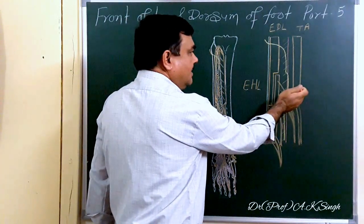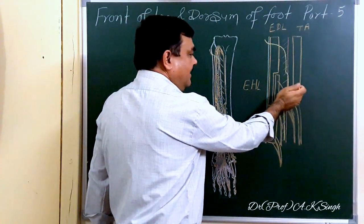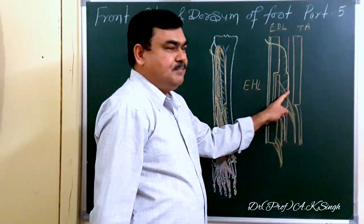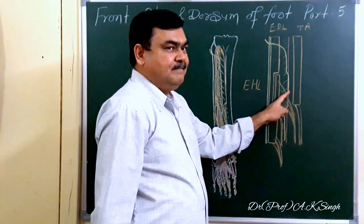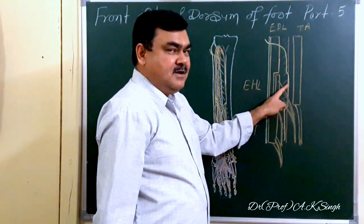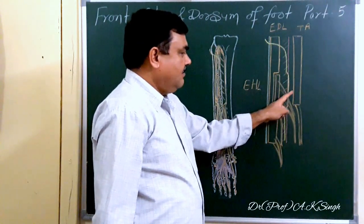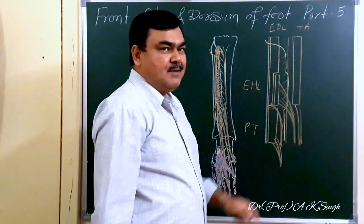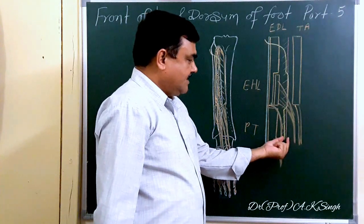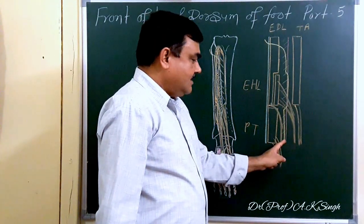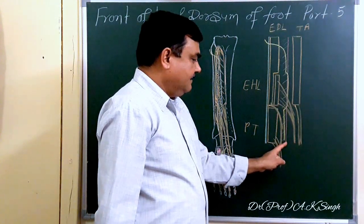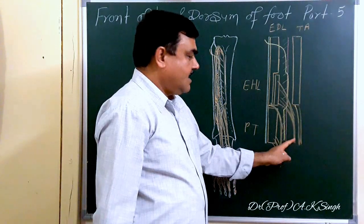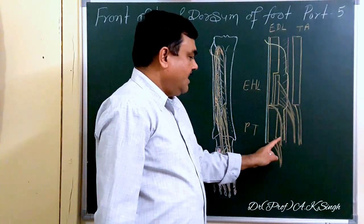In the middle one-third part, the relation is: tibialis anterior, then the two structures — deep peroneal nerve and anterior tibial artery — where the deep peroneal nerve lies anterior to the anterior tibial artery, then laterally extensor hallucis longus. In the lower one-third part, the nerve is lateral, the artery is medial, then there is extensor hallucis longus, and laterally extensor digitorum longus.